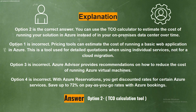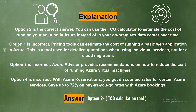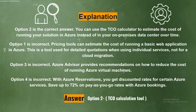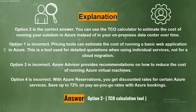Explanation. Option 2 is the correct answer. You can use the TCO calculator to estimate the cost of running your solution in Azure instead of in your on-premises data center over time. Option 1 is incorrect. Pricing tools can estimate the cost of running a basic web application in Azure. This is a tool used for detailed quotations when using individual services, not for a cloud migration.